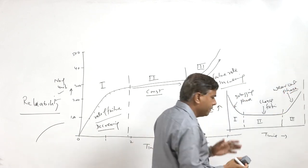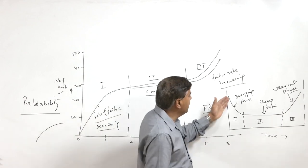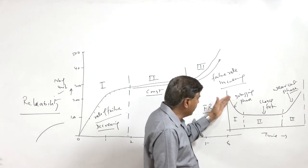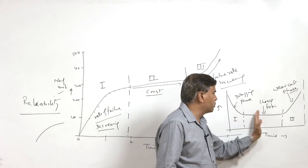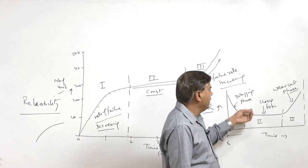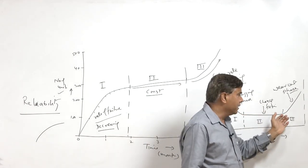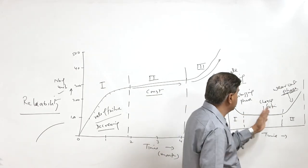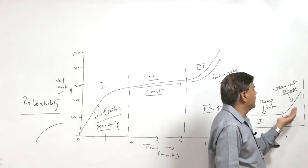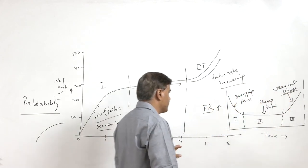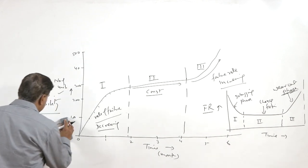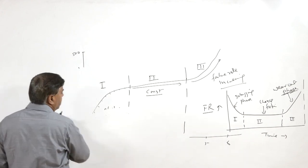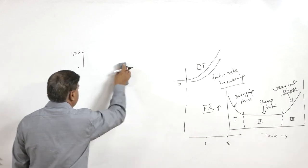Whenever a complex system is put in use, initially it will pose a number of complications, and as soon as we start taking corrective actions the rate of failure will keep on decreasing. Thereafter it will give us the useful life period, where failures will be occurring by chance and that rate becomes almost constant. In the third phase — the wear-out phase — after completing the useful life of the product, the failure rate starts increasing due to the wear and tear experienced by the product.